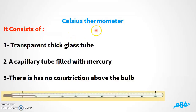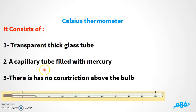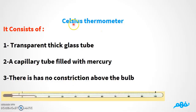Now let's talk about the Celsius thermometer. It consists of: number one, a transparent thick glass tube; number two, a capillary tube filled with mercury — just like the medical thermometer; and number three, importantly, there is no constriction in the Celsius thermometer. The medical thermometer has a constriction above the bulb, but the Celsius thermometer does not.